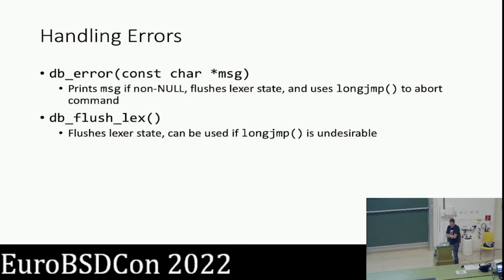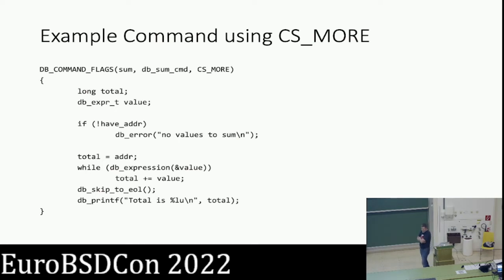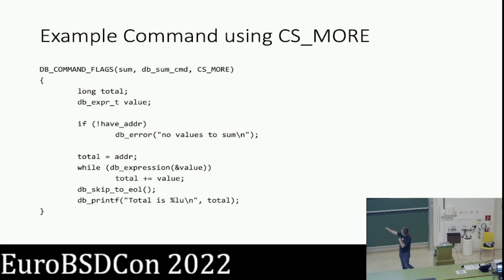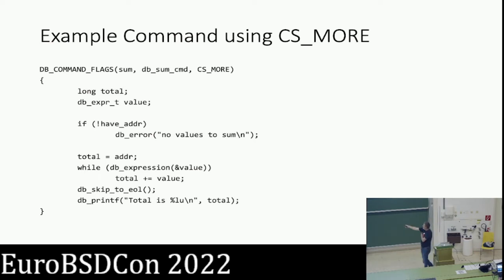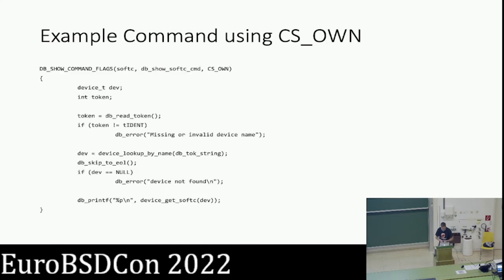Now let's look at examples. The first one uses CS_MORE and is a 'sum' command — it takes an arbitrary list of numbers, requires at least one, and adds them all up. We call db_expression in a while loop waiting for that loop to end. The first word is implicit in addr, so I pull it from there and use a while loop with db_expression to handle additional words. Once done parsing, I call db_skip_to_eol to get DDB's lexer into a good state, then print out the sum.